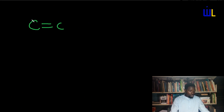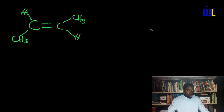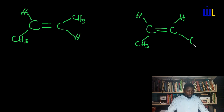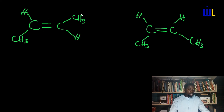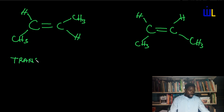Let's consider but-2-ene. In one arrangement, on each side of the double bond, you have hydrogen and methyl — different species on the same side. Because you have different species on at least one side of the bond, this is automatically trans-but-2-ene.